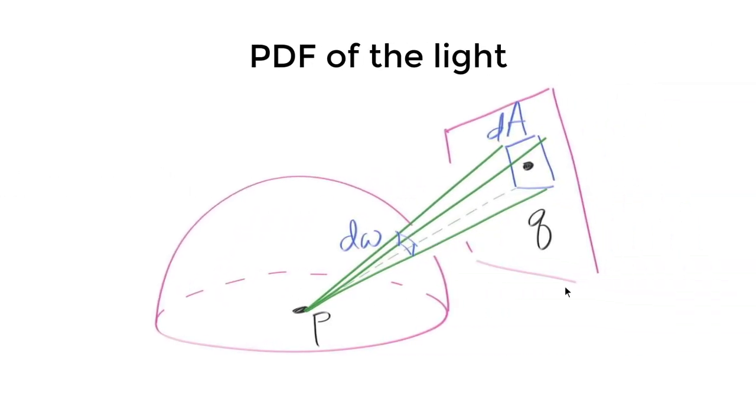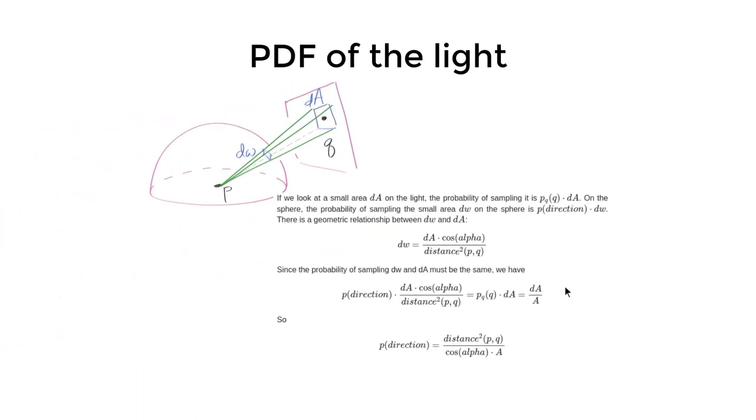Now let's talk about the exciting stuff: how to sample light directly. For light area A, if we sample uniformly on that light, the PDF on the surface of the light is 1 over A. What is it on the area of the unit sphere that defines the direction? If we look at this diagram, if we look at the small area dA on the light, the probability of sampling it is q times dA.